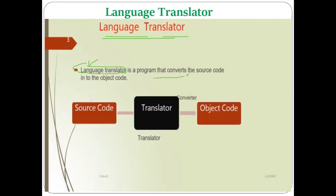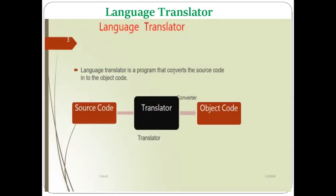The language translator is a kind of system program which converts the source code into the object code. Source code is the language using which the programmer writes the program. Source code can be in the form of any higher-level language like C, C++, Java, C#, etc., or also in assembly language. The object code is nothing but the machine code.